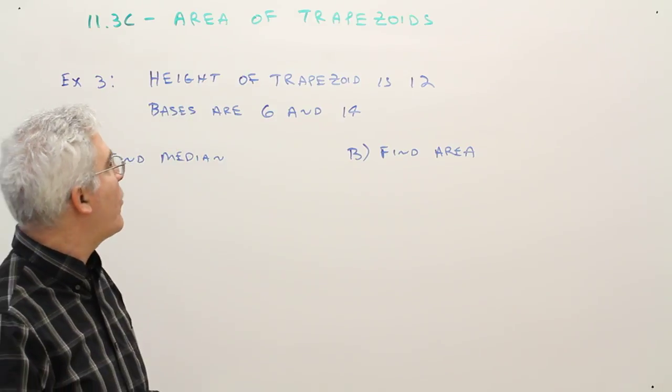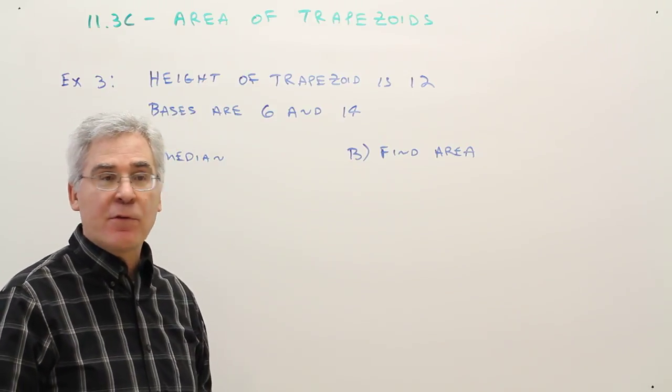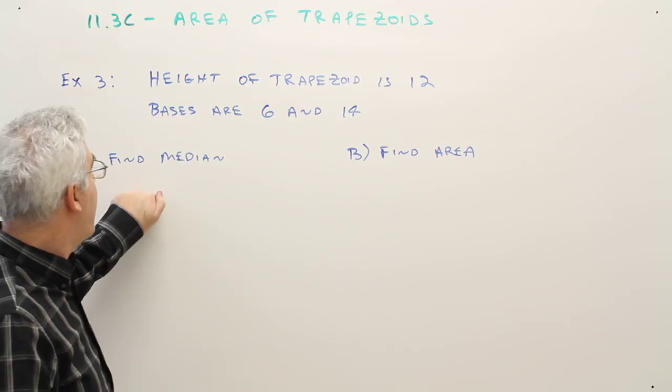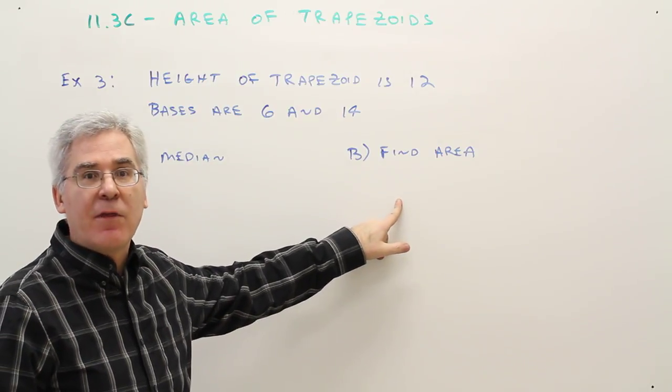So we've got the height of a trapezoid is 12, the bases are 6 and 14. First find the median, and then use that median to find the area.